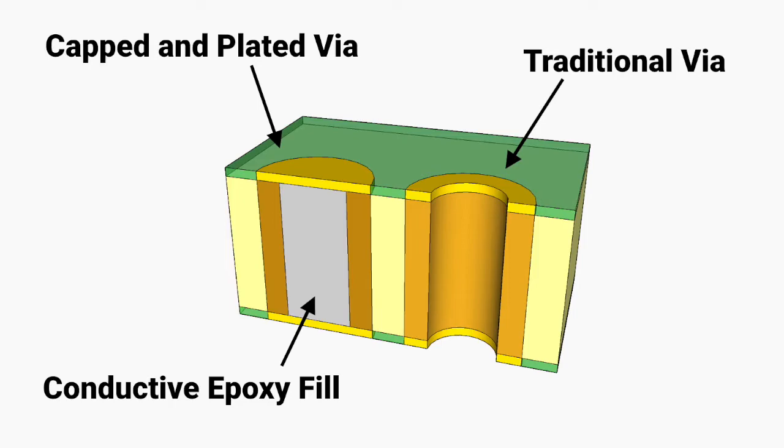Via Fill can be either conductive or non-conductive. The primary consideration in this decision is to match the Via Fill CTE with that of the surrounding laminate as closely as possible.